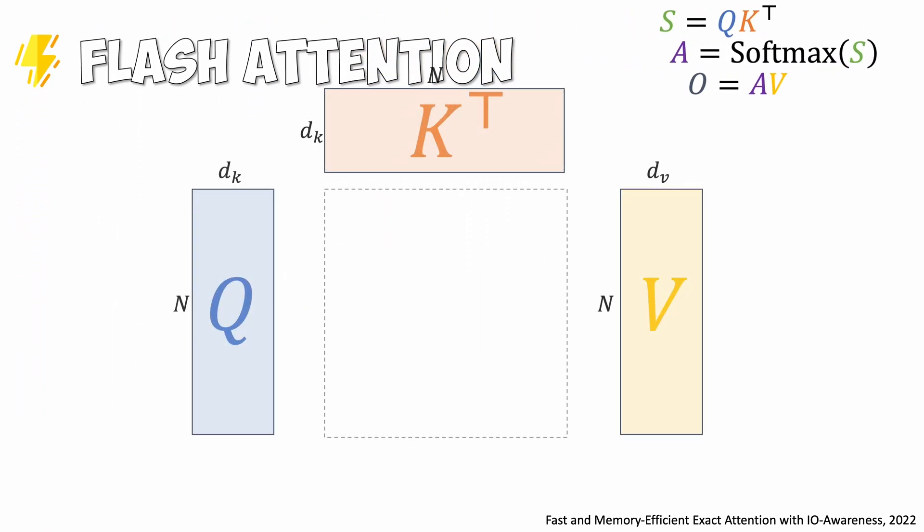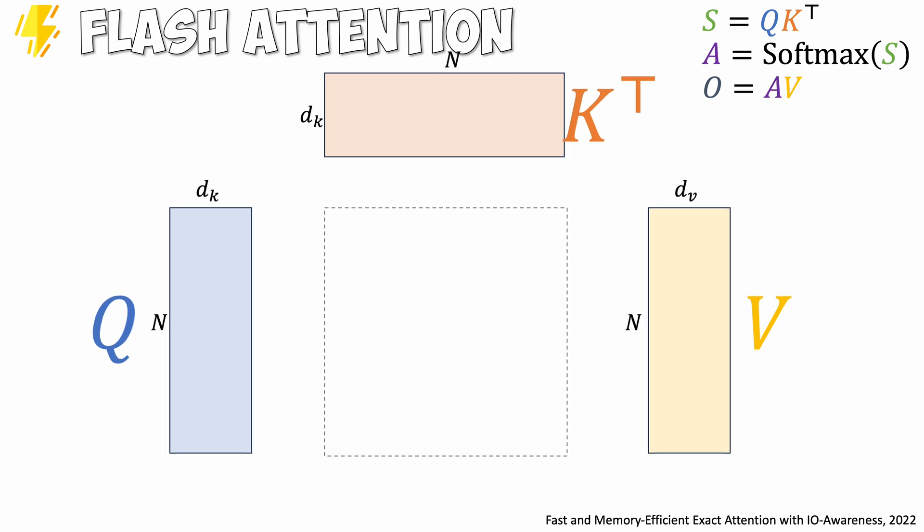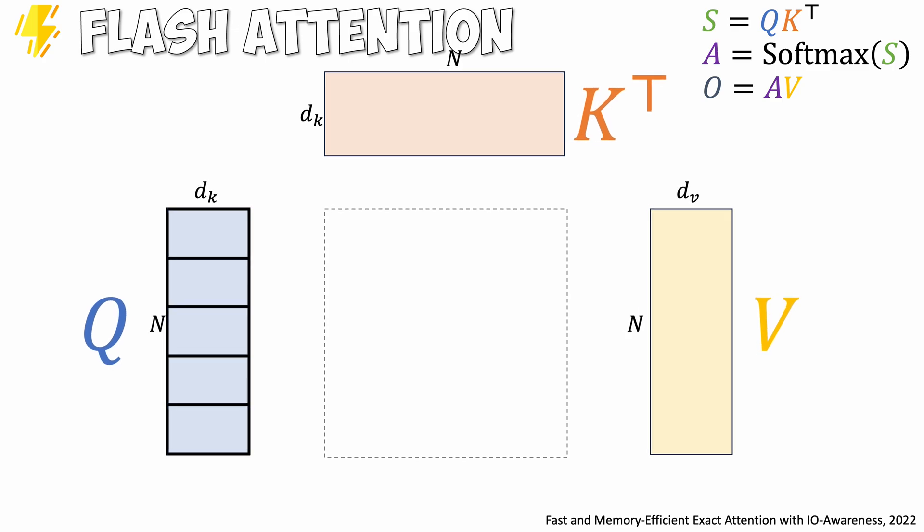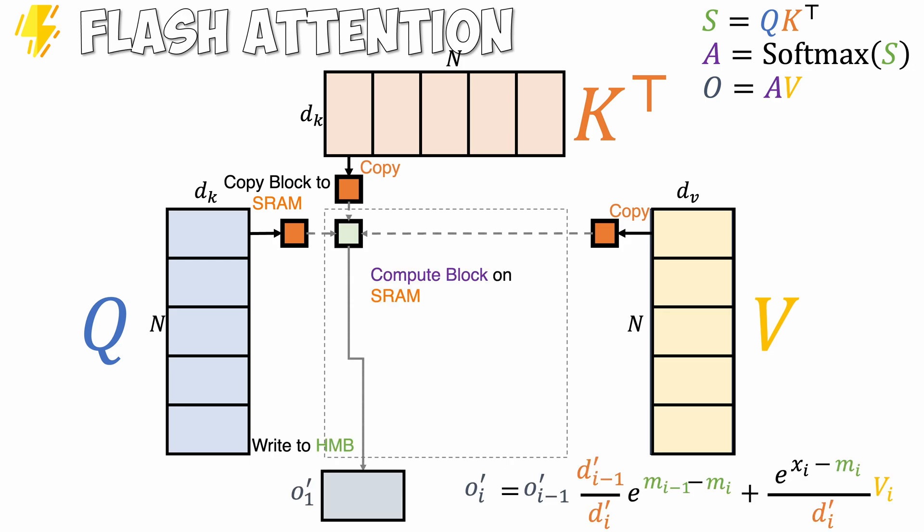Let's visualize these steps. Here we have query, key, and value matrices. We first partition these matrices into tiles. We load the first query tile from HBM to on-chip SRAM. Similarly, we load the first key and value tiles to SRAM. With all these values, we can perform the attention computation and save the partial result to HBM. Now we have the partial result labeled as o1'.